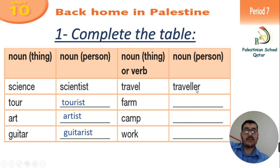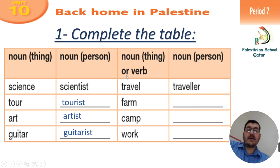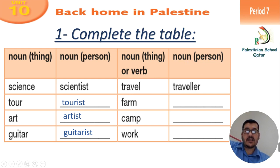Travel becomes traveler — noun person. Noun thing, or sometimes it becomes a verb. Sometimes noun thing and some other times a verb. Here we have travel, noun thing or verb, and the noun person — we just add -ER. Travel becomes traveler. What about farm? Farmer. Camp — camper. Work — walker.